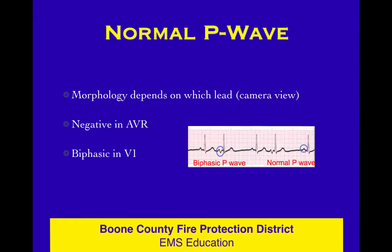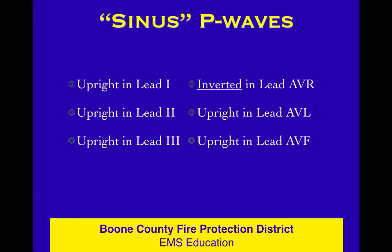What does a normal P wave look like? From different camera views, things are going to look different, so the morphology of a P wave depends on what angle you're looking at it from. It's actually going to be negative in AVR, and in V1 it's going to be biphasic — part of it above and part of it below the baseline. That's normal for those leads. Whereas typically in lead two and lead one, the P wave looks nice and upright.